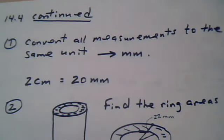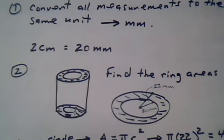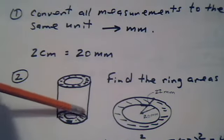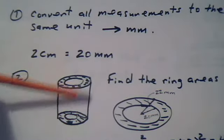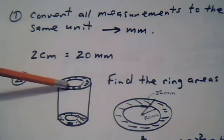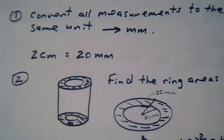Now we can find the surface area. The surface area consists of the area of this ring, plus the area of this ring, plus the lateral area of the big cylinder, the outer cylinder, and the lateral area of the inner cylinder.